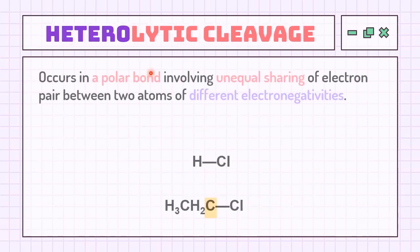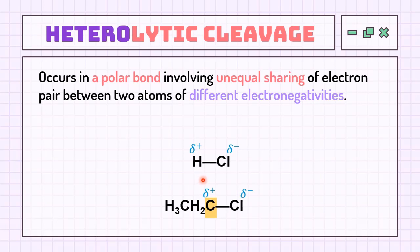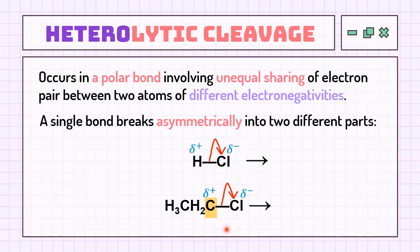Heterolytic cleavage takes place in a polar bond, where two atoms of different electronegativity are joined — one with a partial positive charge, another with a partial negative charge. So this single bond will break asymmetrically into two unequal parts, meaning the arrow used in this cleavage is different from homolytic cleavage. This time, we use a full-headed arrow, meaning both electrons on the single bond will be pulled to only one atom.